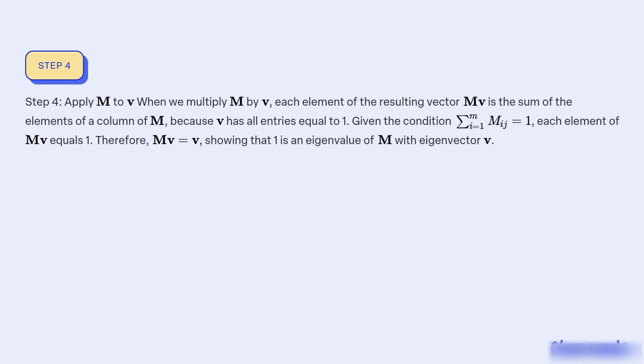Step 4: Apply M to v. When we multiply M by v, each element of the resulting vector Mv is the sum of the elements of a column of M, because v has all entries equal to 1. Given the condition Σ M_ij = 1, each element of Mv equals 1. Therefore, Mv = v, showing that 1 is an eigenvalue of M with eigenvector v.